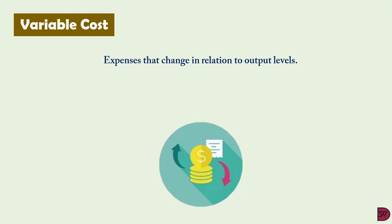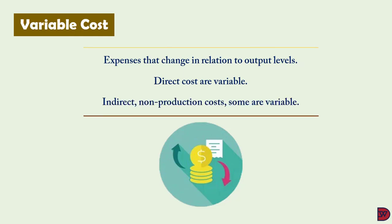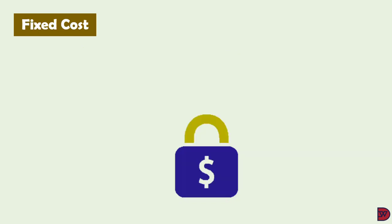Variable costs are expenses that change with output levels, meaning the more goods or services a business produces or renders, the more of these expenses they incur. For example, if a fashion designer increases the number of shirts to produce, the amount of fabric, thread, and buttons will all increase as well, and will reduce if the designer intends to produce less. Prime or direct costs are all variable; some indirect and non-production costs are also variable.